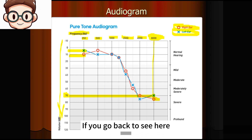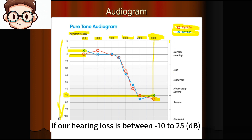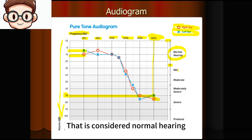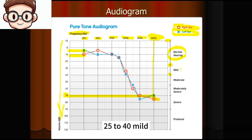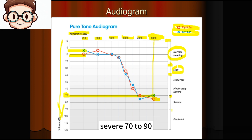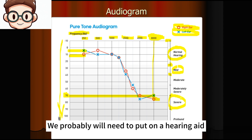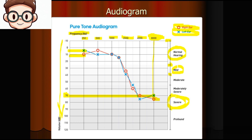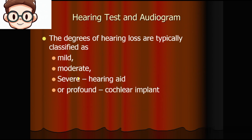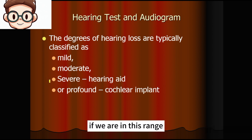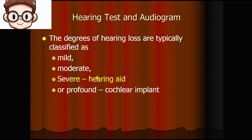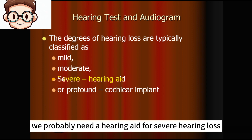If we look at the chart, hearing loss between minus 10 to 25 dB is considered normal hearing. 25 to 40 is mild. Severe is 70 to 90 — we will probably need to put on a hearing aid if we are in this range.